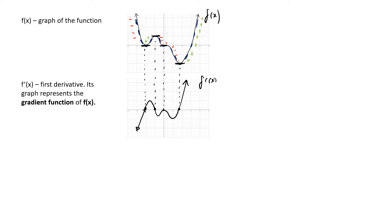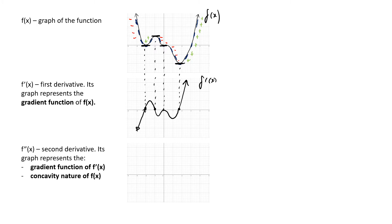Next, we're going to sketch the graph of the second derivative. The graph of the second derivative is the gradient function of f dash x. So repeating the same procedure: first identify the sections where we have got horizontal tangents, because this is going to correspond to where f double dash x is equal to zero. Then we're going to find sections of the curve that are decreasing — and when f dash x is decreasing, f double dash x will be negative.